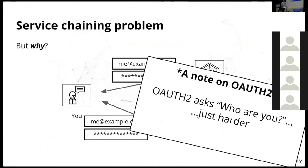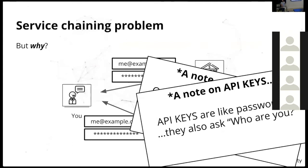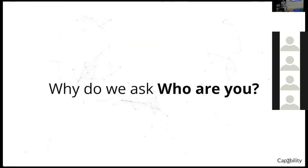OAuth 2 also just asks 'who are you' in a harder way — it goes through more steps but in the end it comes up with who you are. API keys are very much like passwords and they also ask 'who are you.' Now an interesting question comes up: why do we ask 'who are you?' It seems obvious but there's a very particular reason — the access matrix.